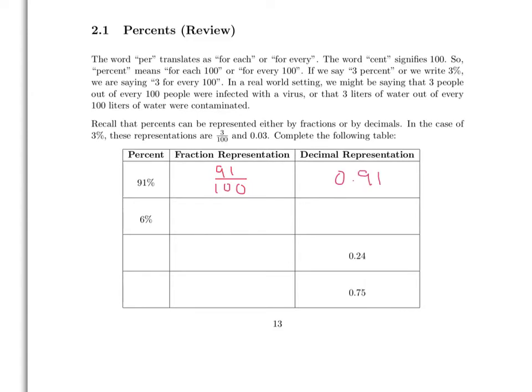6% means 6 out of 100 or 6 one-hundredths. Written as a decimal, it's 0.06.